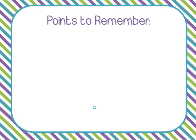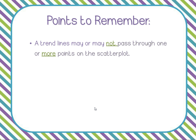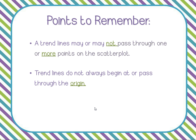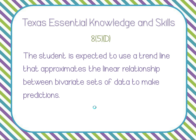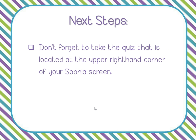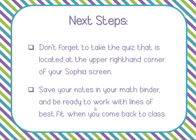Points to remember: your trend line may or may not pass through one or more points on your scatter plot — it may pass through some, all, or none. Also, as you see in our examples, the trend line doesn't have to start at the origin — in fact, none of our examples did. And remember that extrapolation means you're going beyond the data you're given, so it's not always accurate. That does it for us today — we approximated the line of best fit and used it to make predictions. Don't forget to take your quiz in the upper right-hand corner. See you next time!